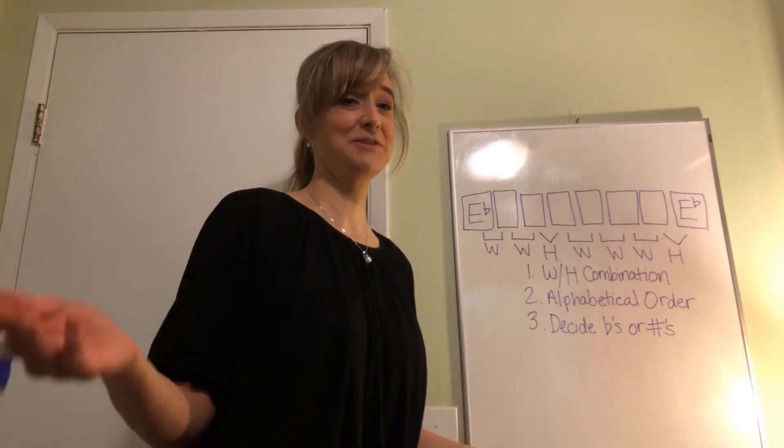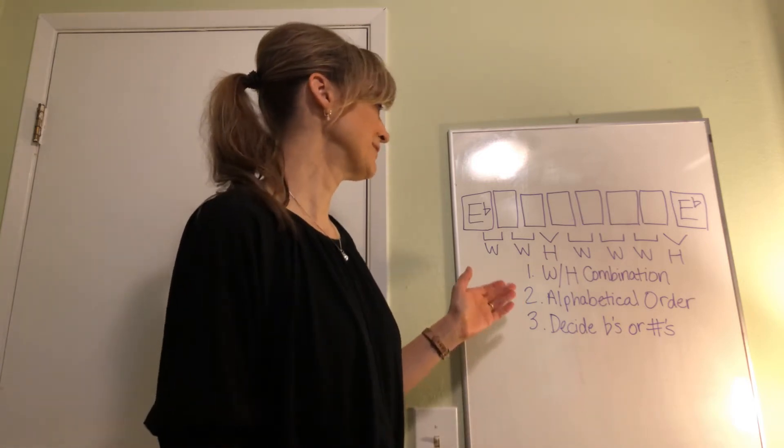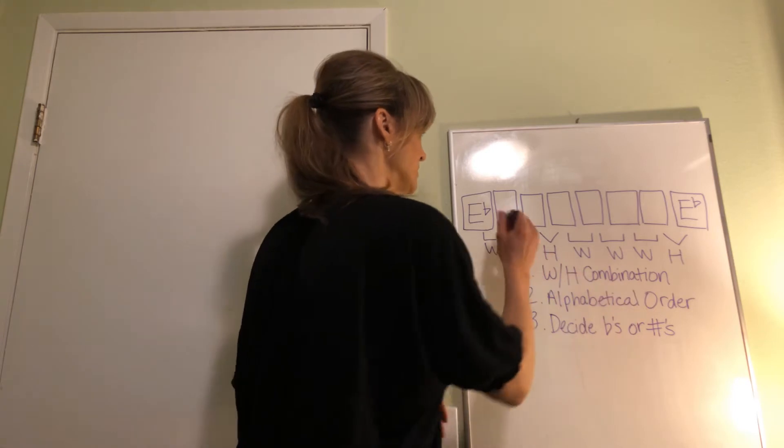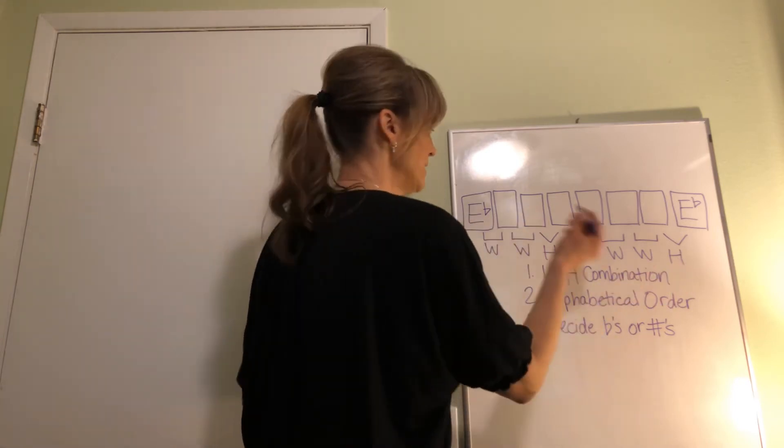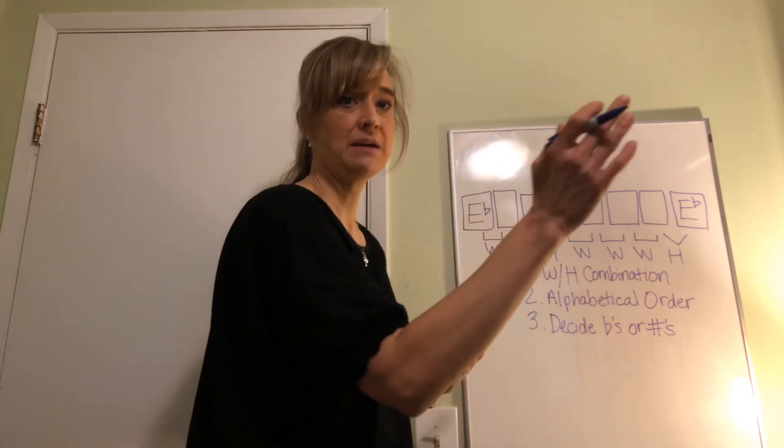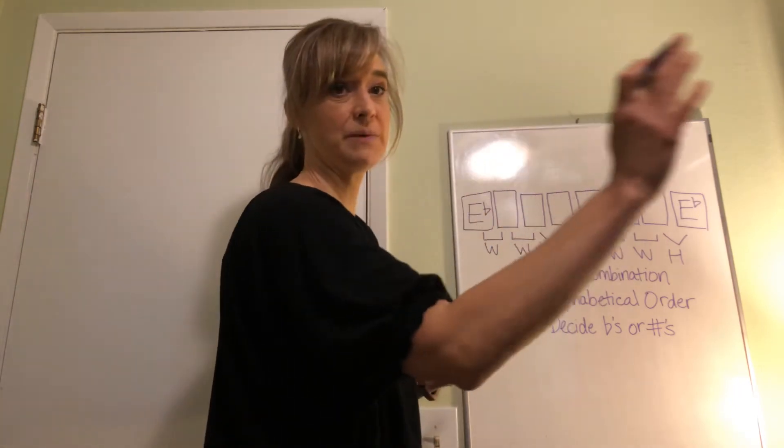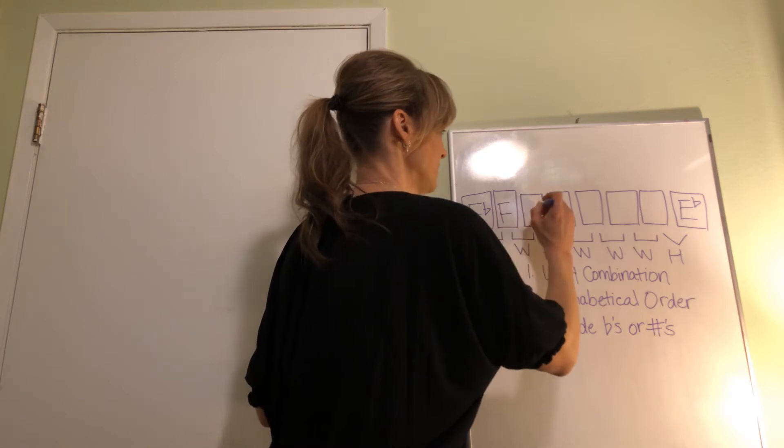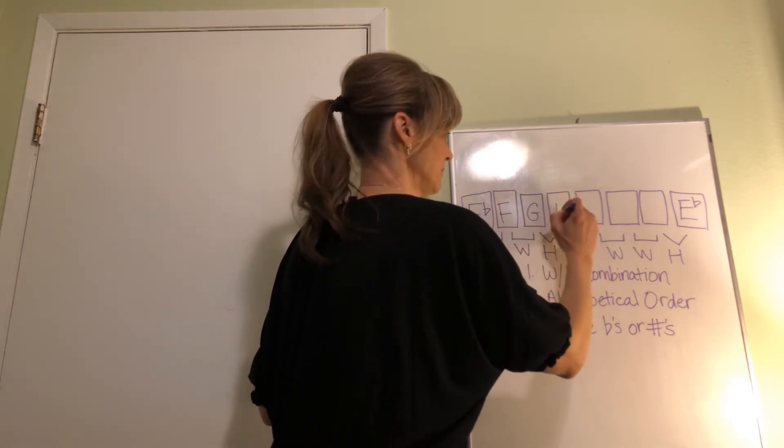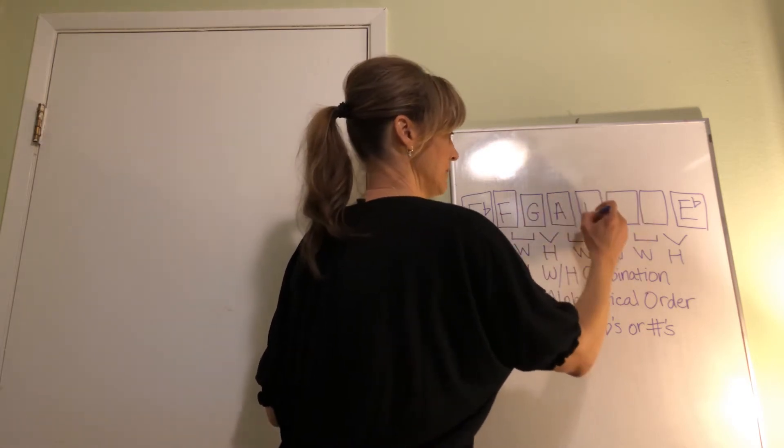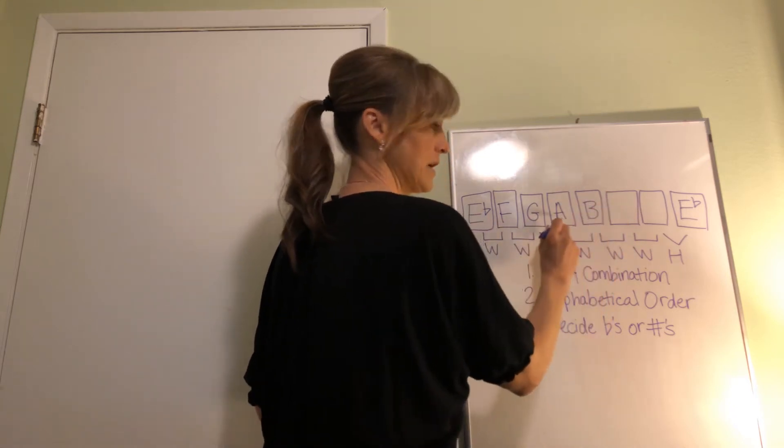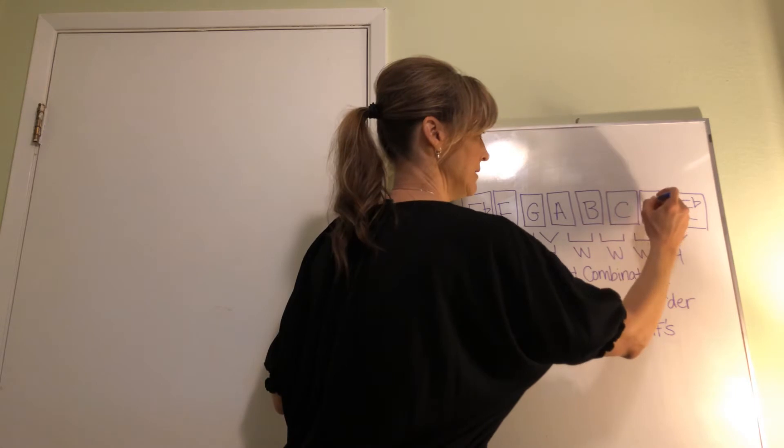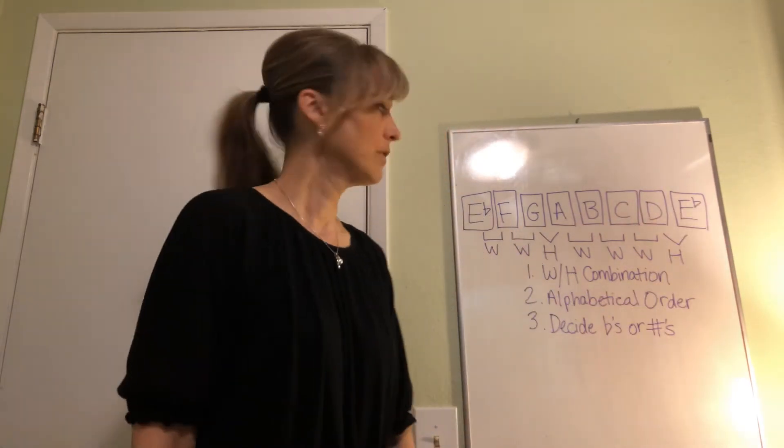Now we've got to fill in our alphabet. Make it easy on yourself. Do the easiest part first before you fill in your sharps and flats. Step two: alphabetical order. So we fill in the alphabet. If we come to G and keep going, we go back to A, right? So E, F, G, A. We go back to A. B, C, D, and we end on E-flat.